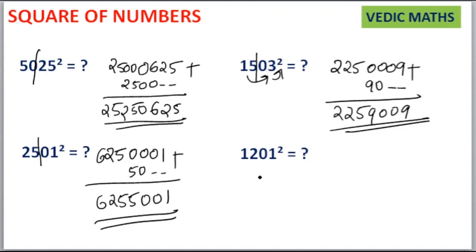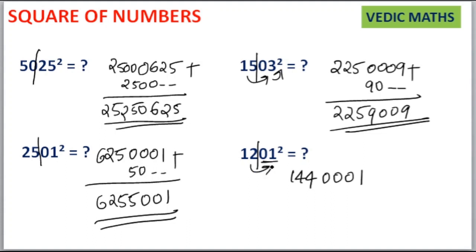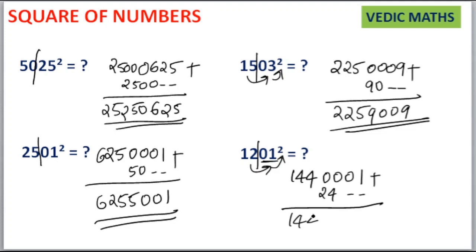Next is 1201 squared. Separate as 12 and 01. Then 12 squared is equal to 144. 01 squared is equal to 1 — write it as a 4-digit term: 0001, because RSS has 2 digits. Then 12 into 1 is equal to 12, and 12 into 2 is equal to 24. Leave the unit place and 10th place, then write 24 here. Adding the terms together gives you 1442401 as your answer.